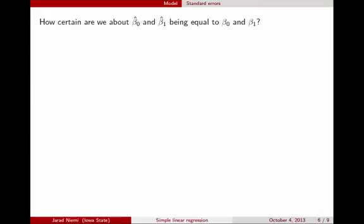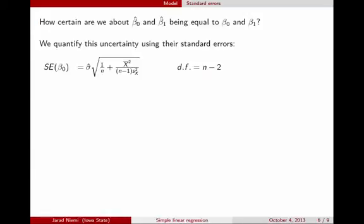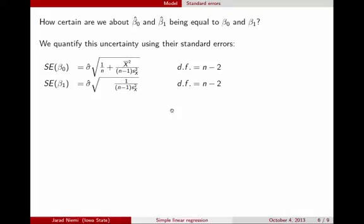We might be interested in knowing how good those estimates are, or what uncertainty we have around them. We quantify that uncertainty using the standard error of the two estimates. The standard error for beta 0 uses the estimated standard deviation from the previous page along with a formula involving sx. The standard error for beta 1 has a similar form but without the 1 over n term or x-bar in the numerator. Here, sx squared is sxx divided by n minus 1, and sy squared is syy divided by n minus 1.